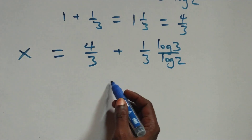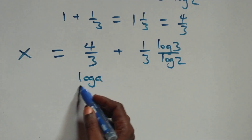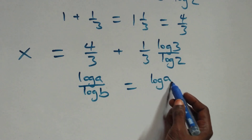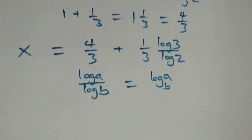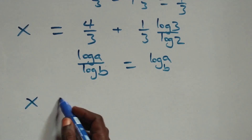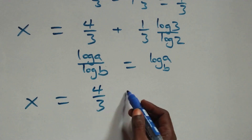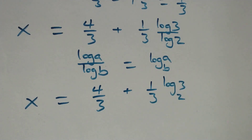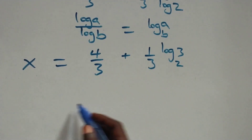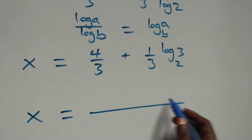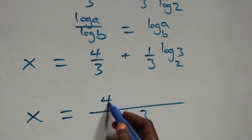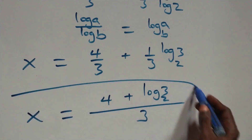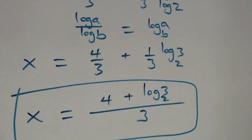Then we apply the change of base rule: log A over log B is the same thing as log A to base B. So what we have here becomes x equals to 4 over 3 plus 1 over 3 times log 3 base 2. We can bring this together as a fraction with denominator 3: x equals to 4 plus log 3 base 2, all over 3.